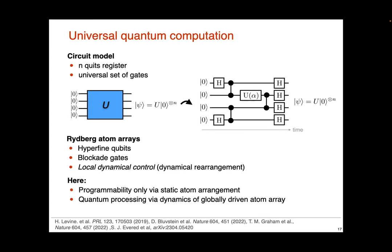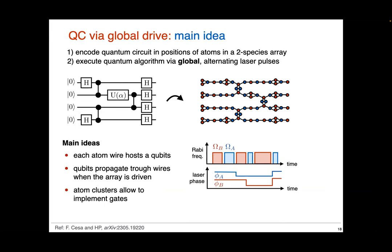What I'd like to tell you is that in principle you wouldn't need locally dynamic control — you could do the entire thing just with global control. The idea is to encode the entire circuit in a combination of atom arrangements and globally driving pulses. One of the things we're going to need is two species of atoms so that we can address species-selectively. We will have some form of control over which species we drive, but no local control other than the static placement of atoms.